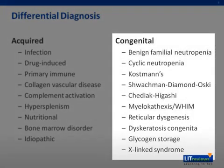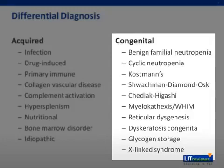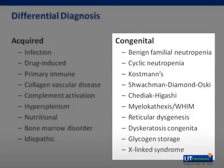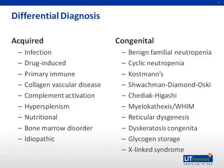Congenital cases include benign familial neutropenia, which is a neutropenia found in certain ethnic populations such as West Africans and their descendants, Yemeni Jews, Cretans, and so forth. In this patient population, the neutropenia is mild and usually not a functional neutropenia. There are also a lot of congenital neutropenia syndromes, such as cyclic neutropenia, Kostmann's, Shwachman-Diamond, Chediak-Higashi, myelokathexis, reticular dysgenesis, dyskeratosis congenita, glycogen storage disease such as von Gierke's disease, and X-linked syndromes such as Wiskott-Aldrich and Bruton's agammaglobulinemia. The most important thing in distinguishing acquired from congenital causes is whether the patient has a history of neutropenia or if this is a new development.